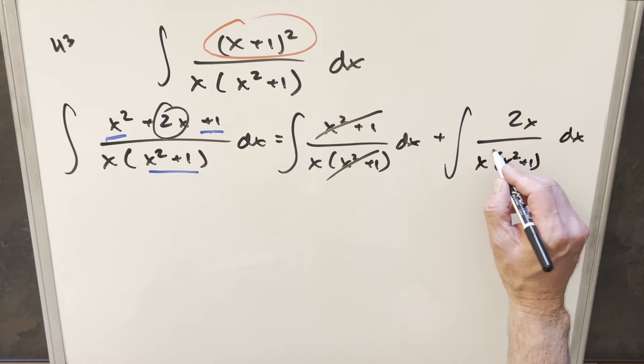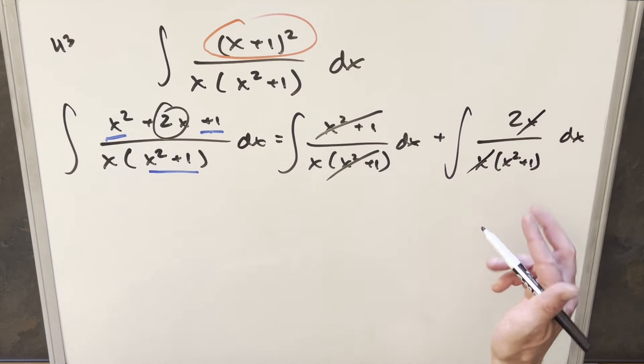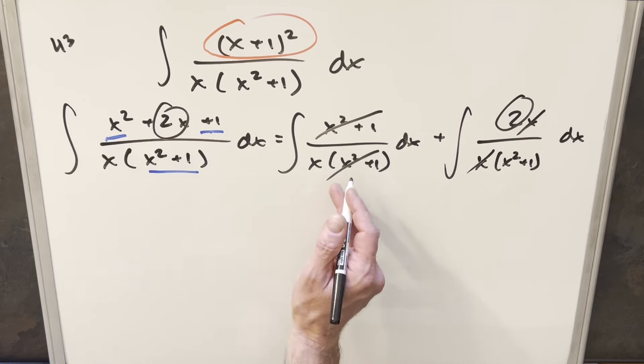But in the second integral we get cancellation as well, we can get rid of these x's, and this is basically just the arctan integral with a 2 in the numerator. Just like that, we're basically at our solution.